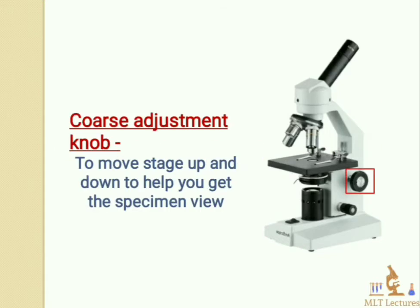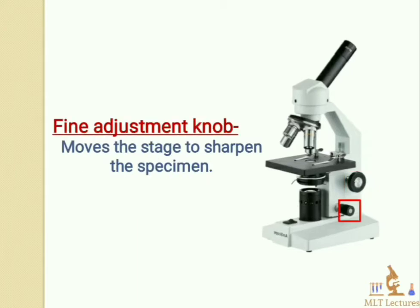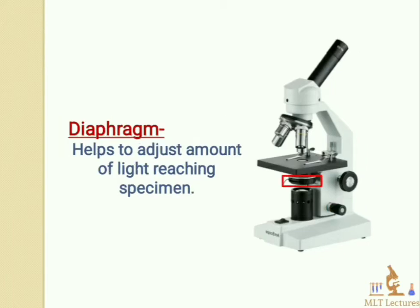The coarse adjustment knob is used to move the stage up and down to help you get the specimen in view. The fine adjustment knob helps to sharpen the specimen after it is viewed using the coarse adjustment knob. The diaphragm helps to adjust the amount of light reaching the specimen.